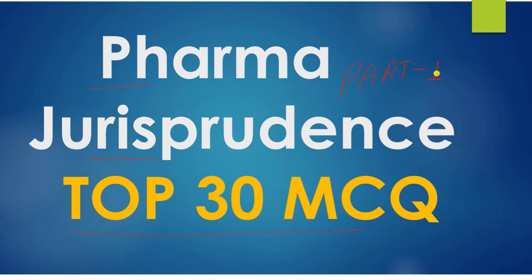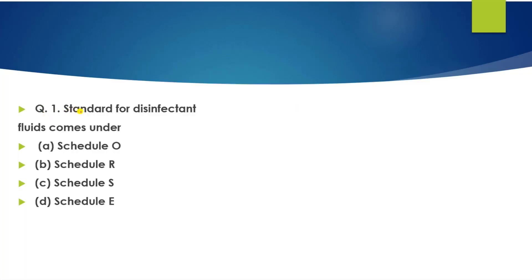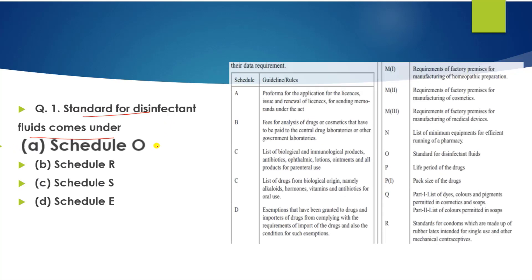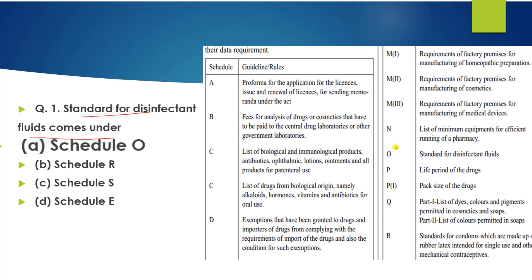Question number 1: Standard for disinfectant fluid comes under which schedule? The correct answer is Schedule O. Schedule O is for the standard of disinfectant fluid. You get quite a few questions from schedules regularly, so remember all the schedules.